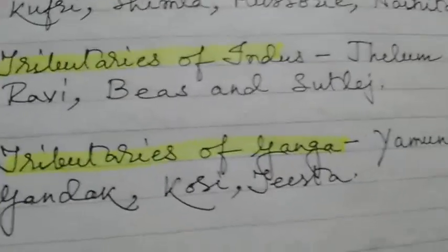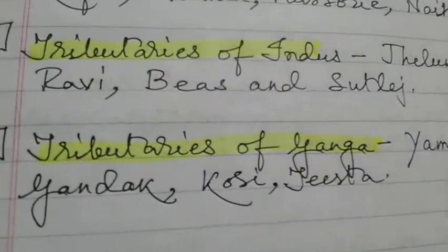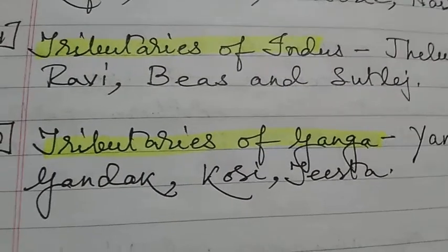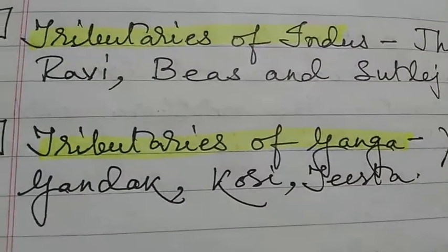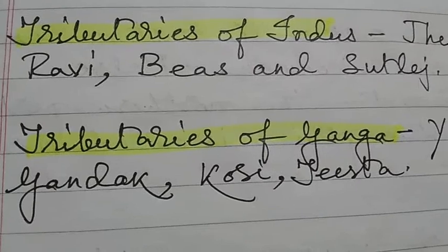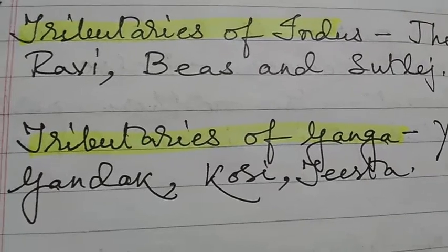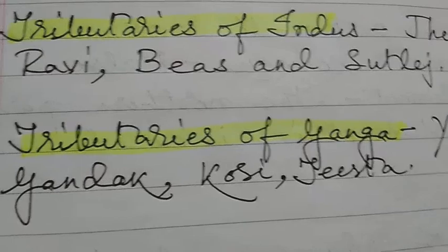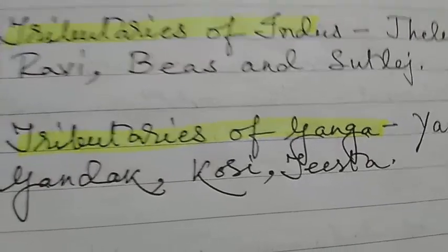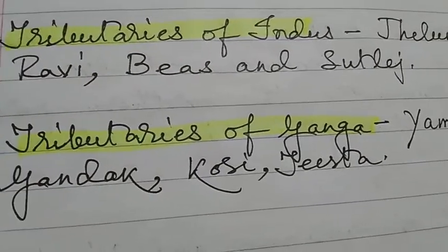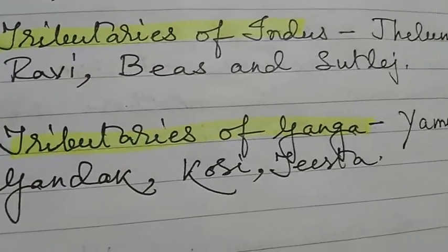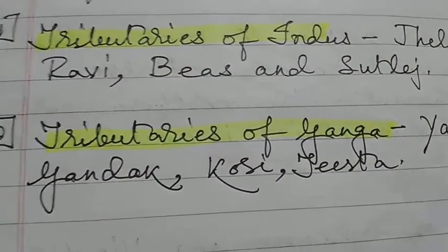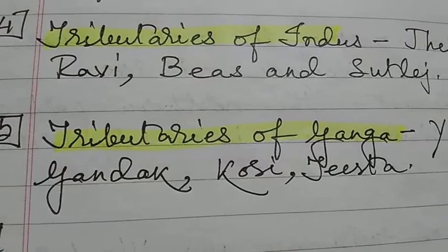So these were the objective type questions for this chapter. There are many questions, and the questions from the book are also included above. Write all of them in your class copy and memorize them with the help of a map. This is all for today's class — goodbye until our next class.